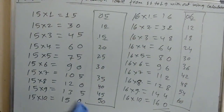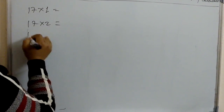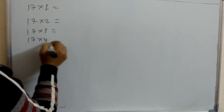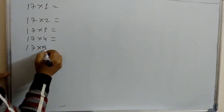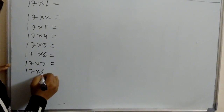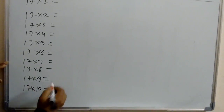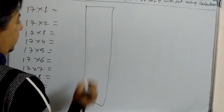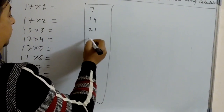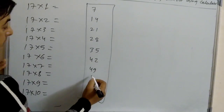Now let's learn 17. The same method can be applied up to 19. 17×1, 17×2, 17×3, 17×4, 17×5, 17×6, 17×7, 17×8, 17×9, 17×10. For this you have to know the table of 7: 7, 14, 21, 28, 35, 42, 49, 56, 63, 70.